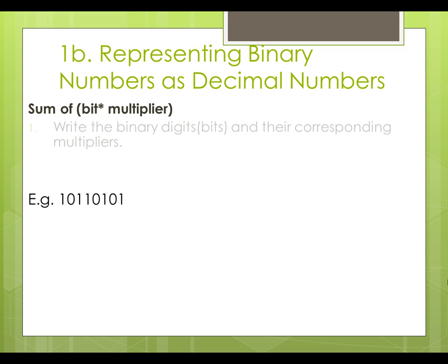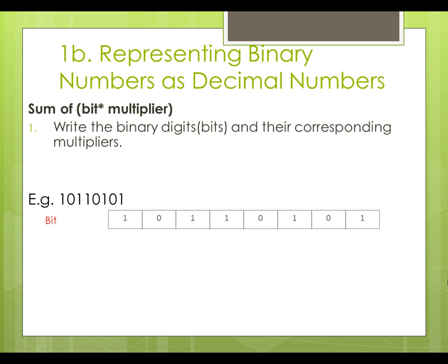Firstly, we will write down all the bits and their corresponding multipliers. The multiplier of a bit is 2 to the power of the bit index. The bit index of the rightmost bit is 0, and it increases 1 by 1 from right to left. So the rightmost bit's multiplier is 2 to the power of 0, which is 1.